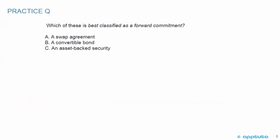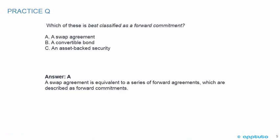We'll finish this LOS with three quick practice questions. The first: which of these is best classified as a forward commitment? A) a swap agreement, B) a convertible bond, or C) an asset-backed security? A swap agreement is a forward commitment because a swap is equivalent to a series of forward agreements, which are described as forward commitments. A convertible bond is not a forward commitment, nor is an asset-backed security.